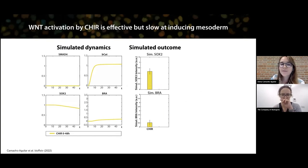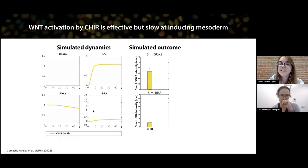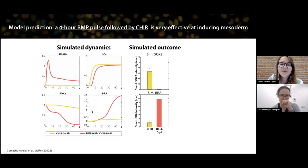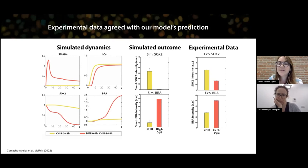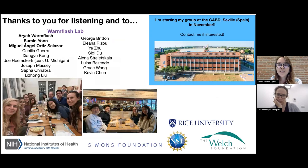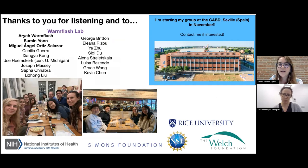Thanks to this fate map, we came up with a new protocol to make mesoderm that was more effective than simply putting WNT with CHIR in the media, which takes three days to make mesoderm. By using BMP for a short time to reduce pluripotency and then using CHIR to induce WNT, we obtained high mesoderm induction in just two days.